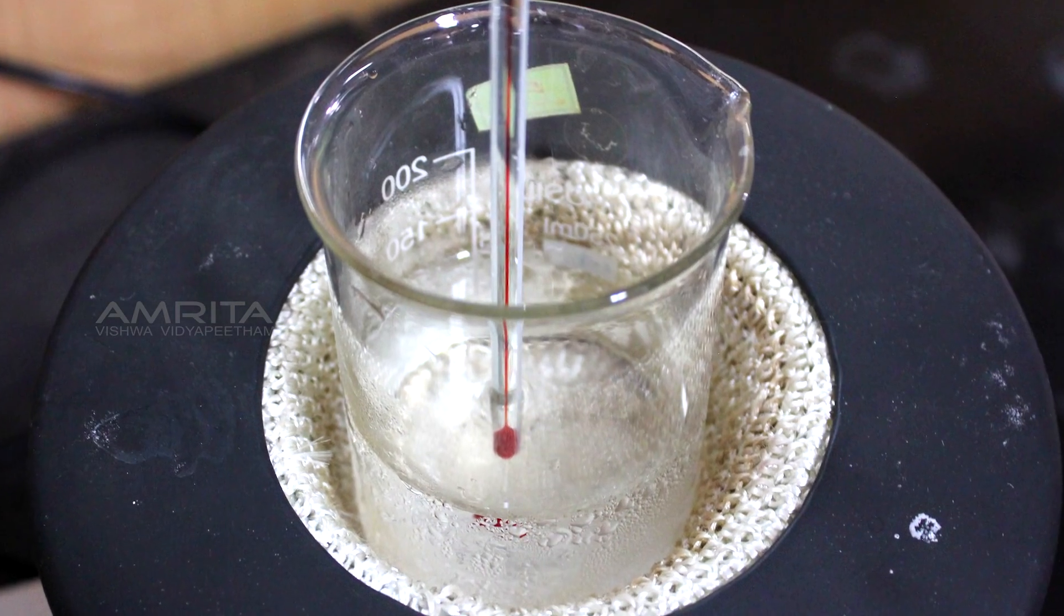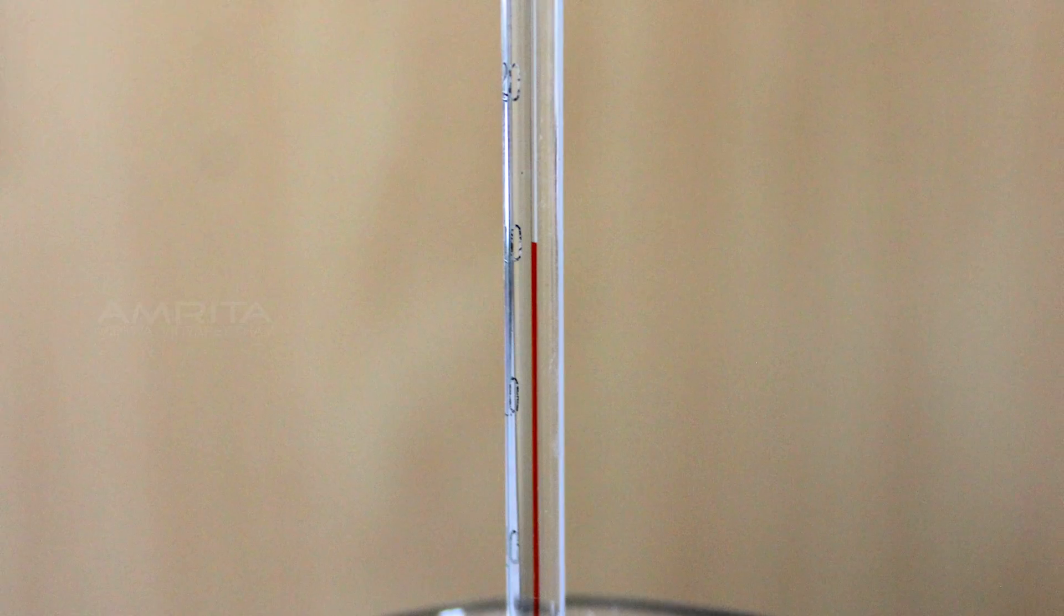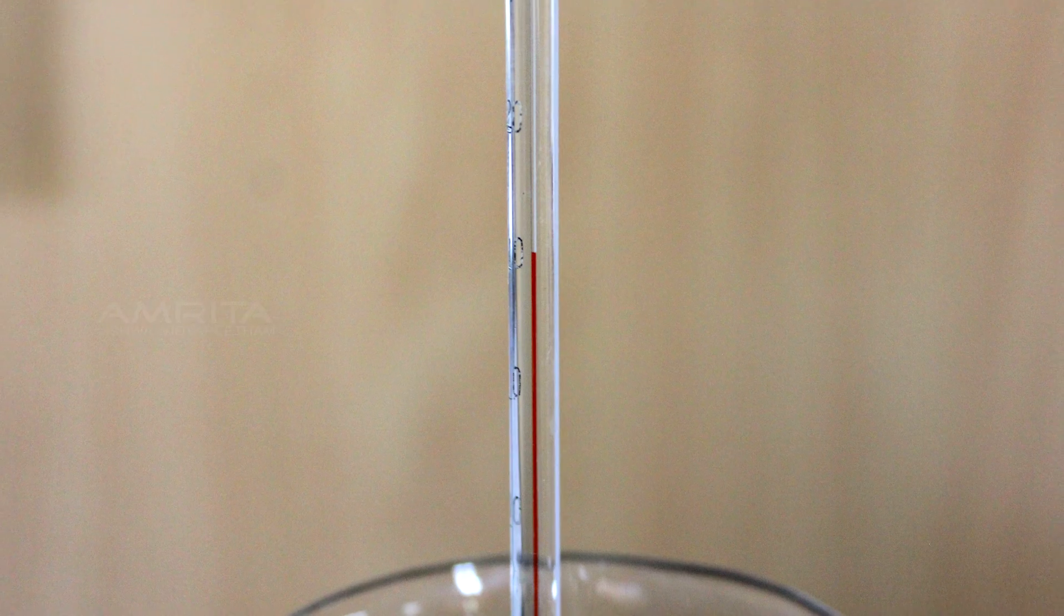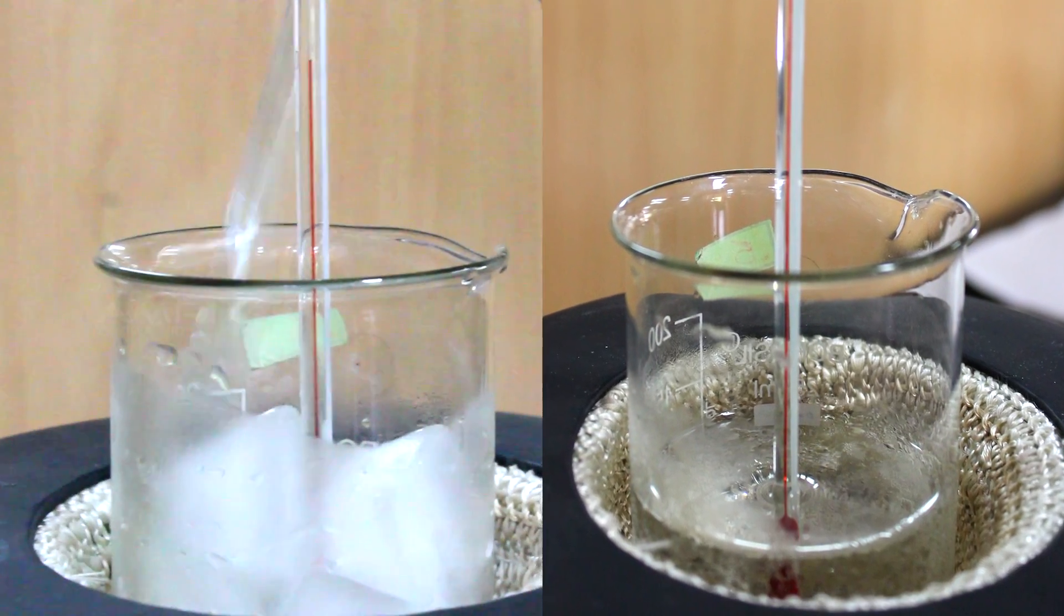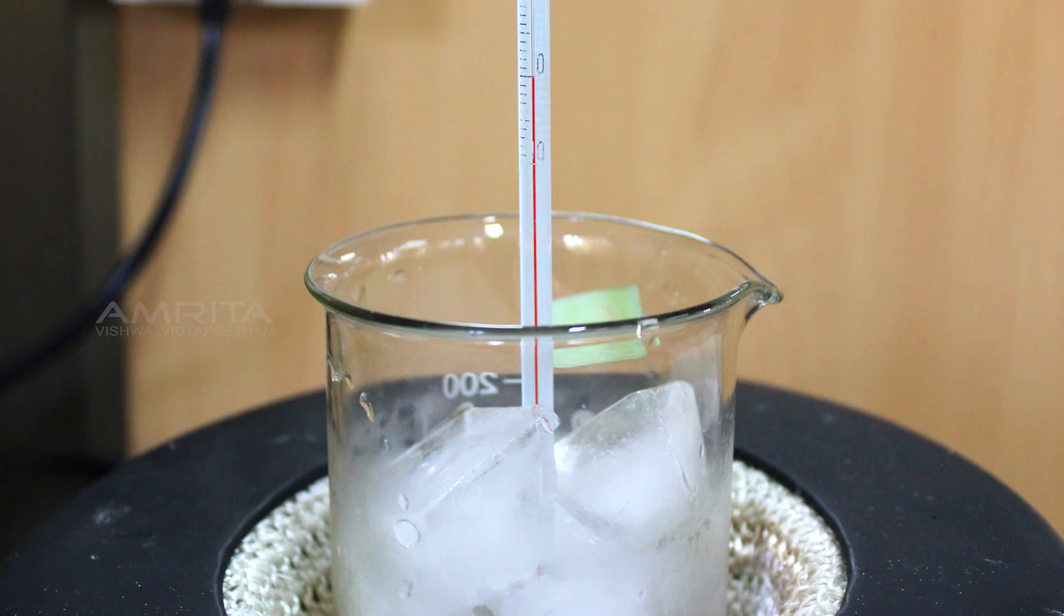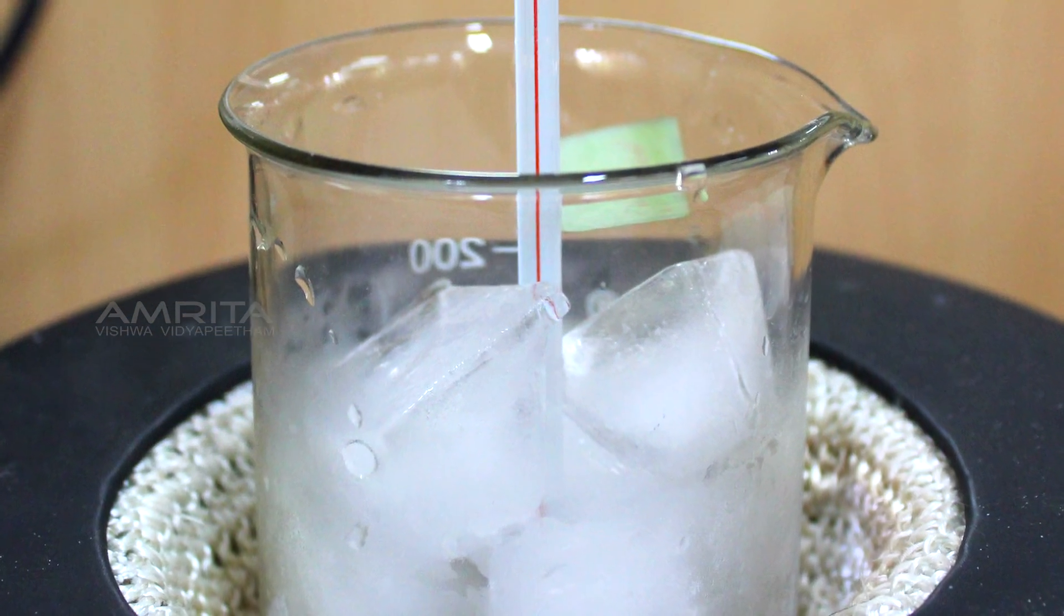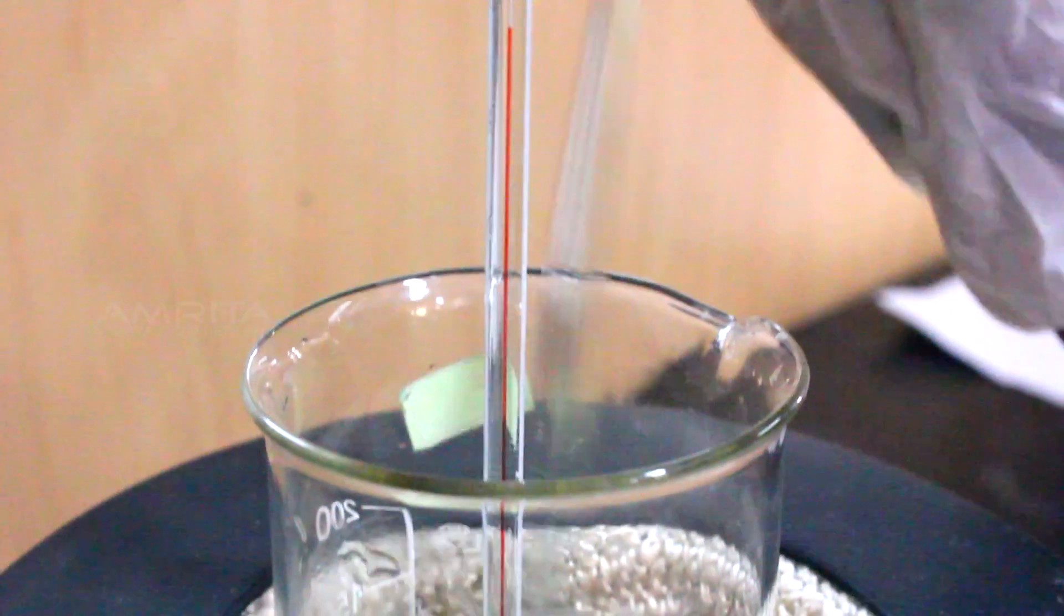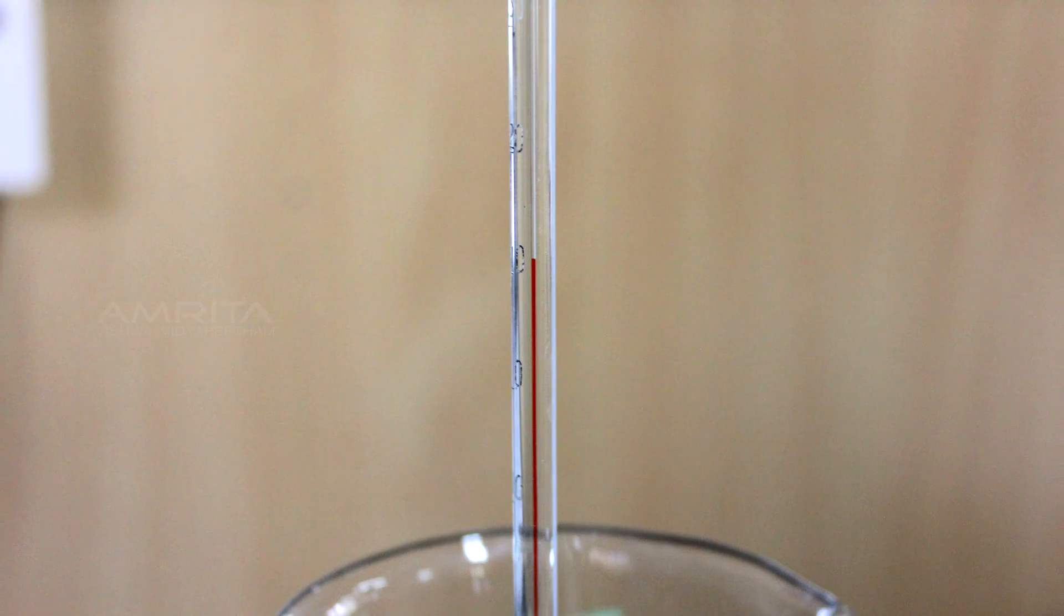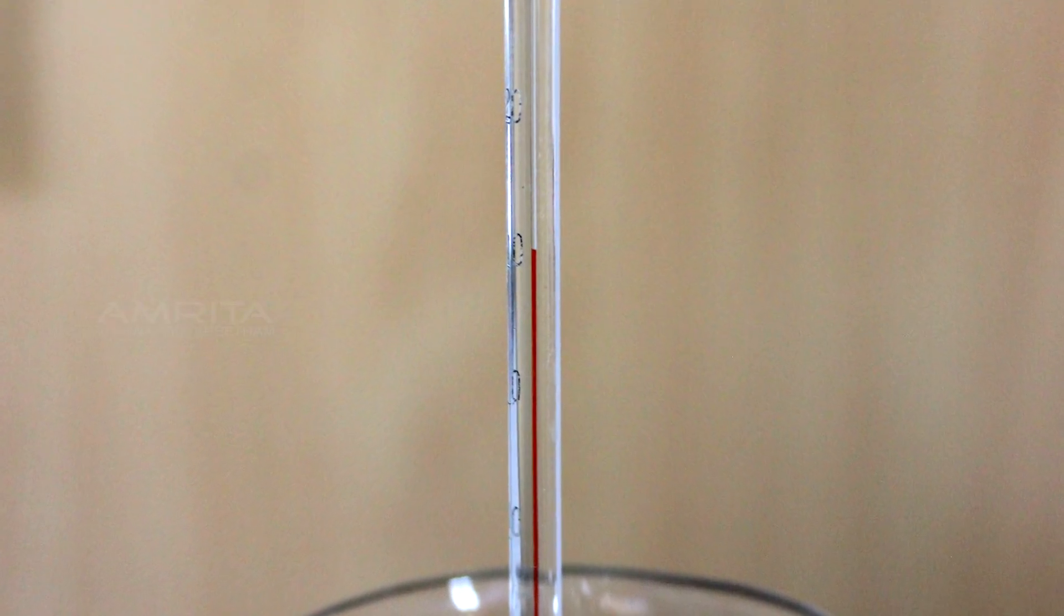We can observe that the temperature remains at 0 degrees Celsius. Take the mean of these two temperatures T1 and T2 to find the melting point of ice. Since both the temperatures are at 0 degrees Celsius, we get the melting point of ice as 0 degrees Celsius.